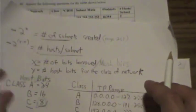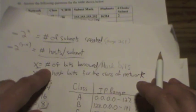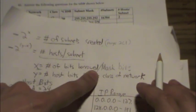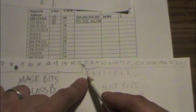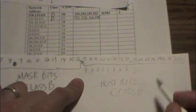And if you look at our equation here, we're looking at the number of bits borrowed. So if we're looking at the number of bits we're borrowing from the hosts, we count them: 1, 2, 3, 4, 5, 6, 7, 8, 9. So it looks like x equals 9.